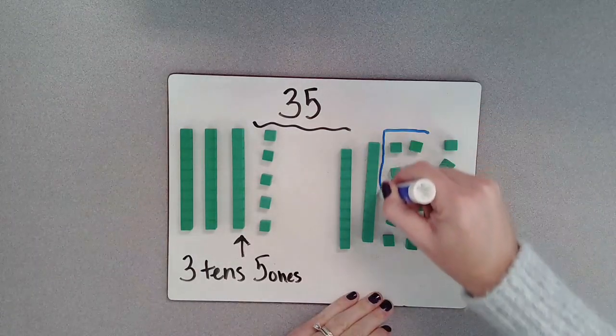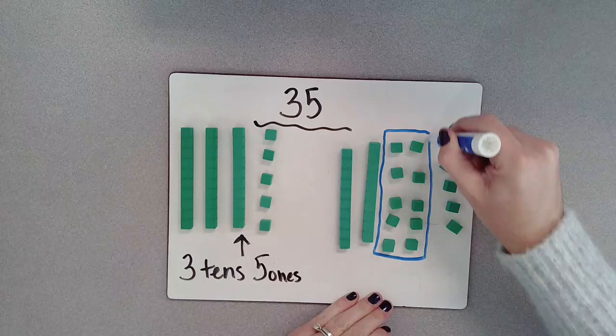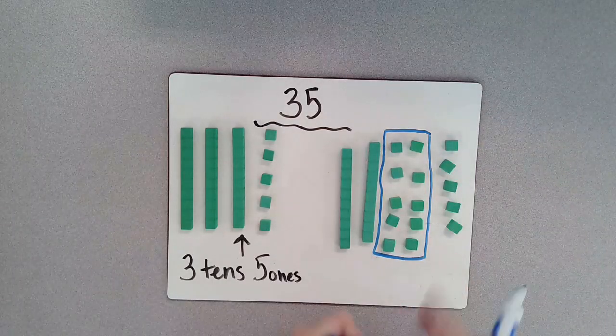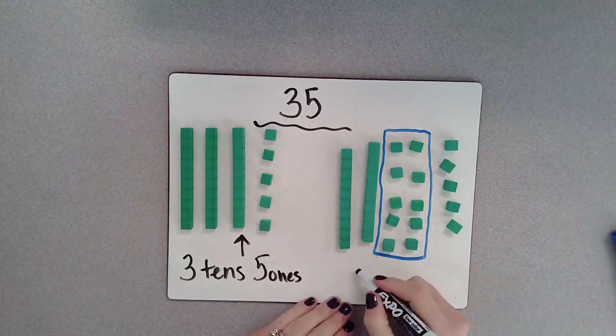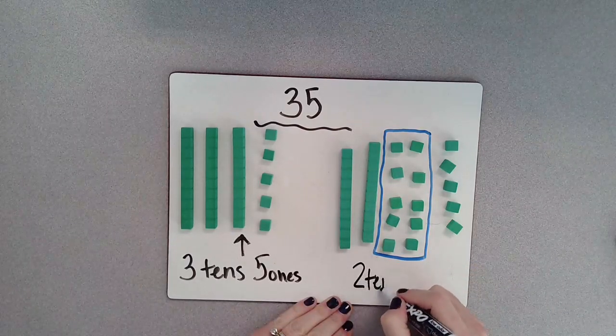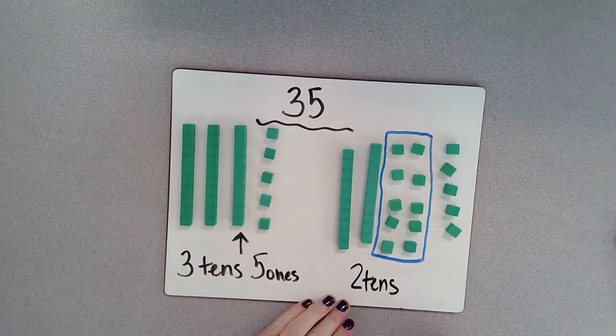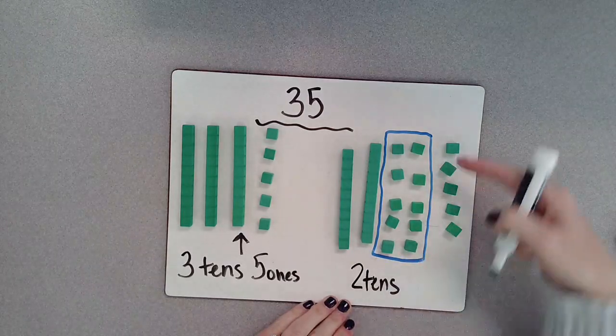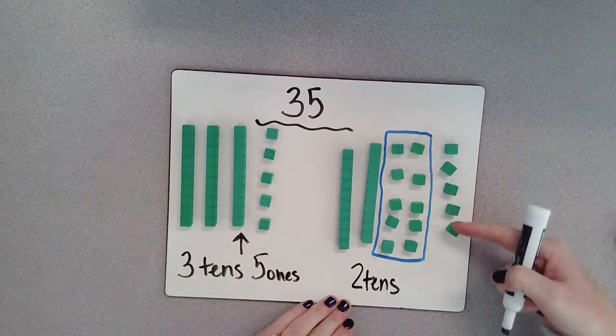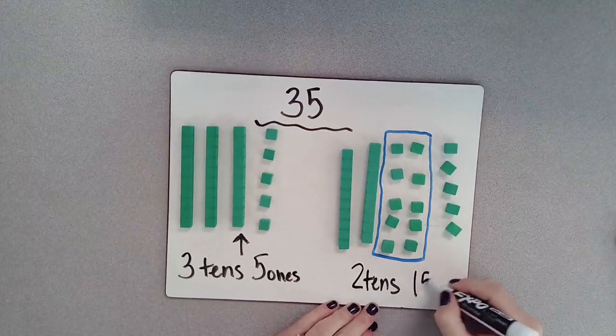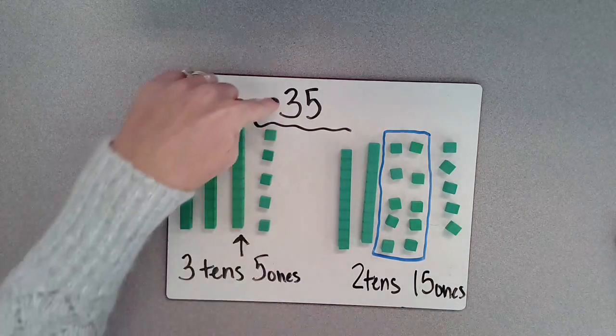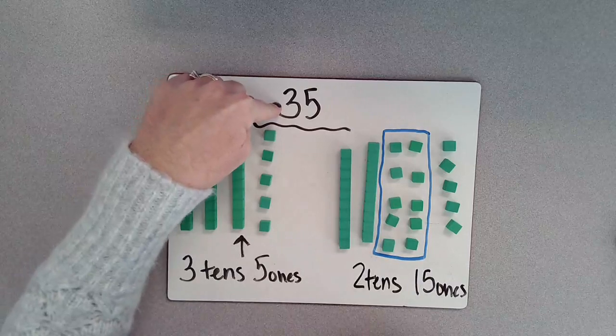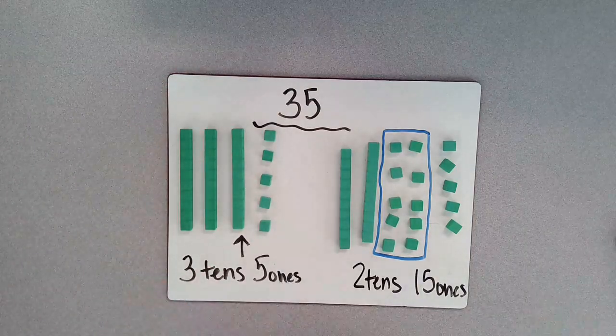So keep in mind that these blocks right here represent a 10, but I'm showing them as ones. So I have two tens and 15 ones because I have 10, 11, 12, 13, 14, 15—so 15 ones. So these are two ways that you can break apart 35 into tens and ones.